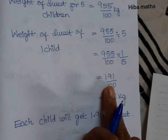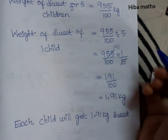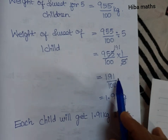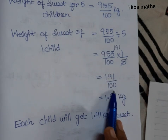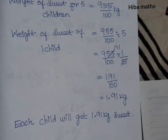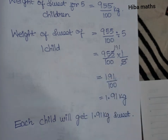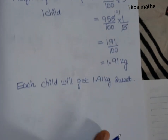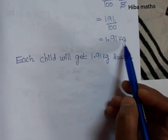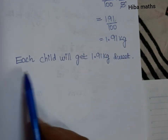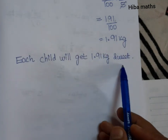The answer is 191. We cancel by 100, so 191 divided by 100. Divided by 100 moves the decimal 2 places. Each child will get 1.91 kg of sweets.